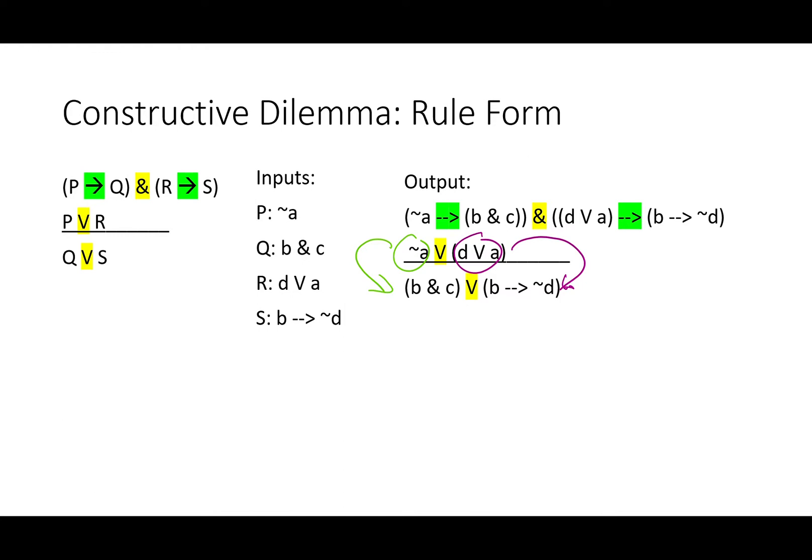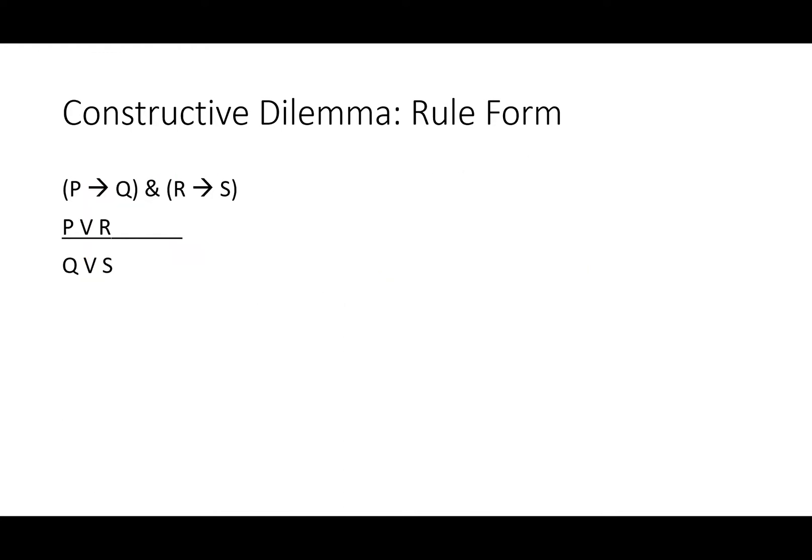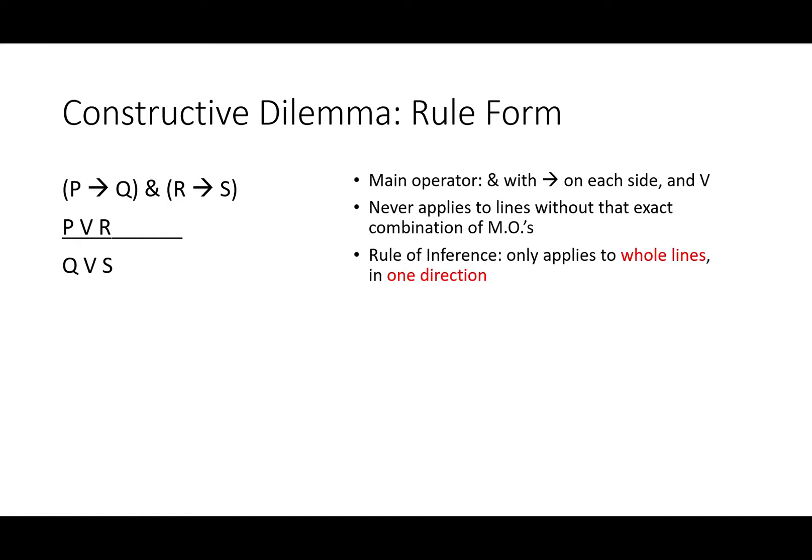This rule form is pretty complicated, so this might be a good slide to pause and take some notes. The main operator is going to be an ampersand with arrows on each side, as well as a V both for one premise and for the conclusion. This never applies to any lines without that exact combination of main operators. The rule of inference only applies to whole lines and it only goes in one direction. You certainly can't get all of this information out of Q or S alone. It always cites exactly one conjunction of conditionals and one disjunction, and it results in another disjunction.